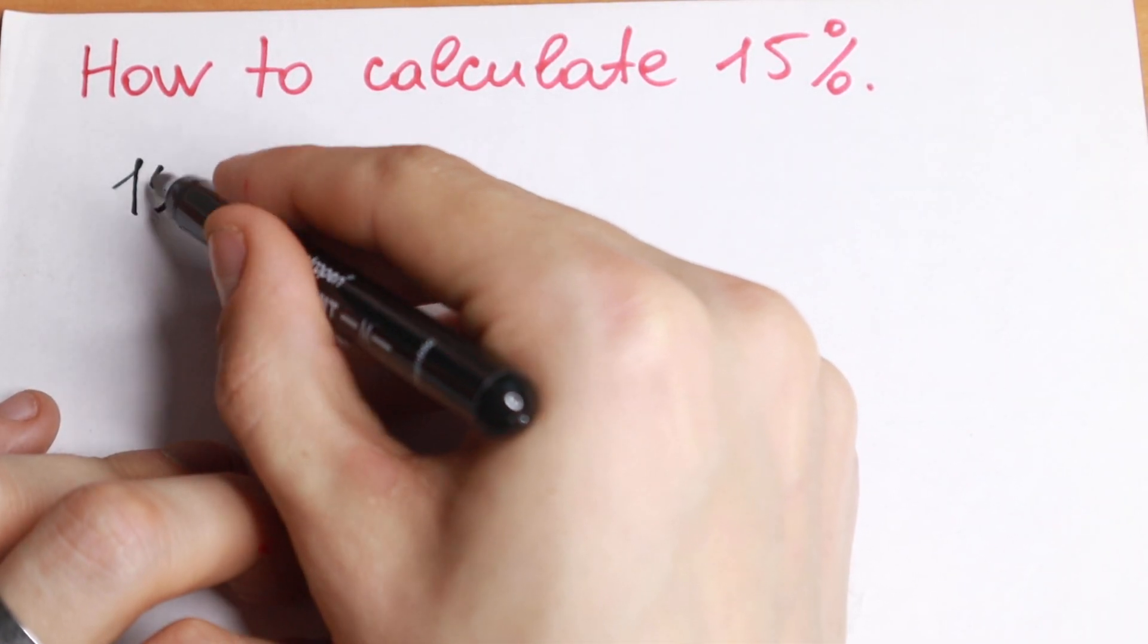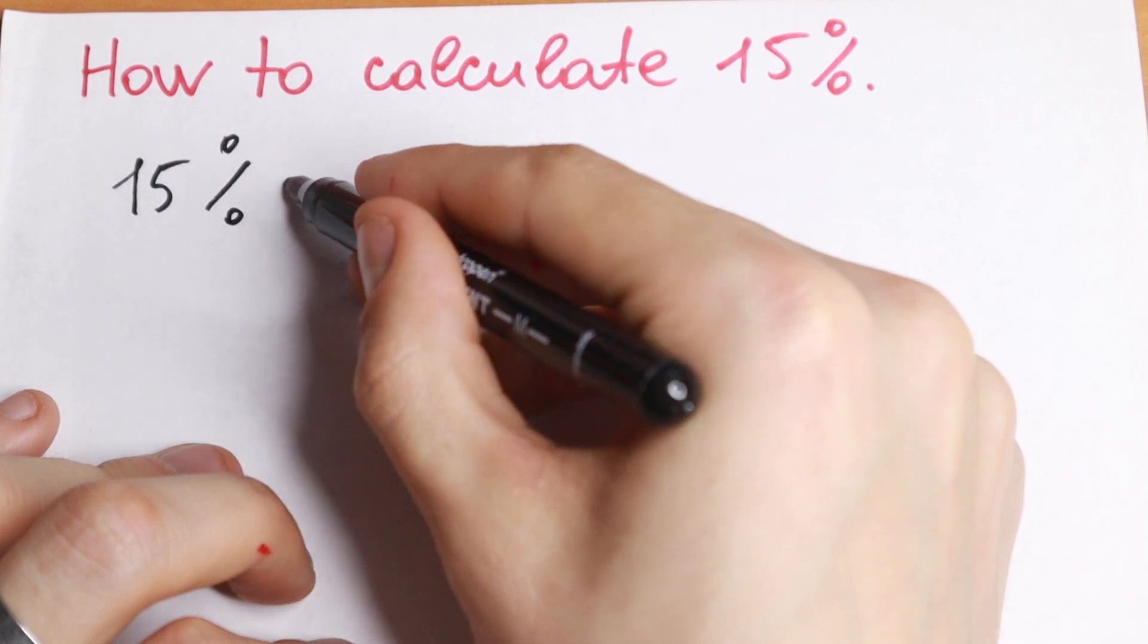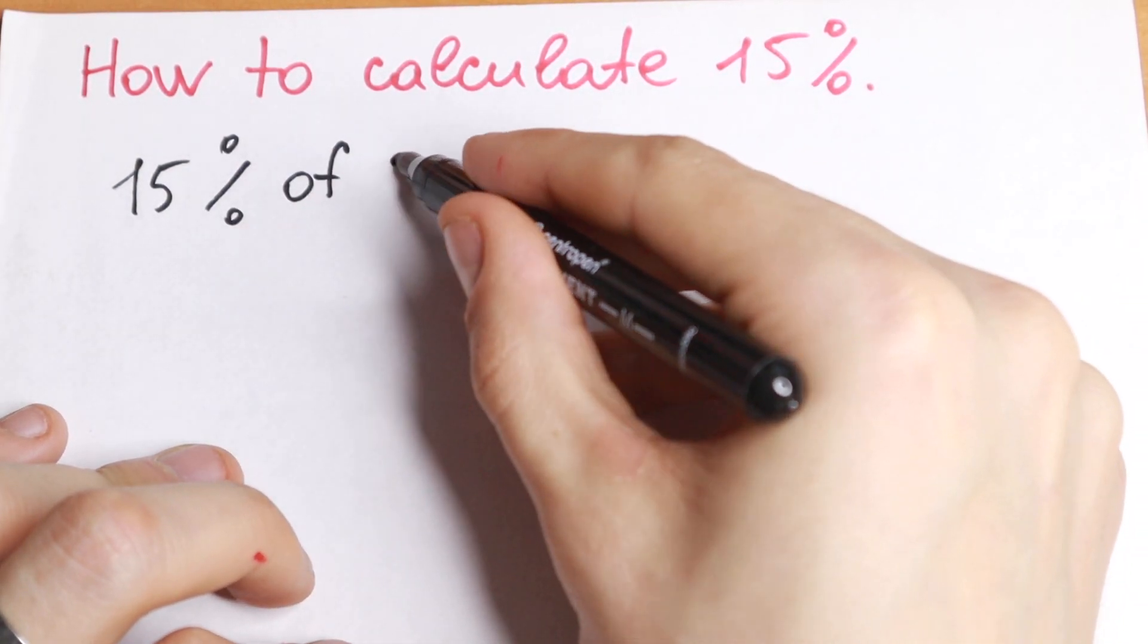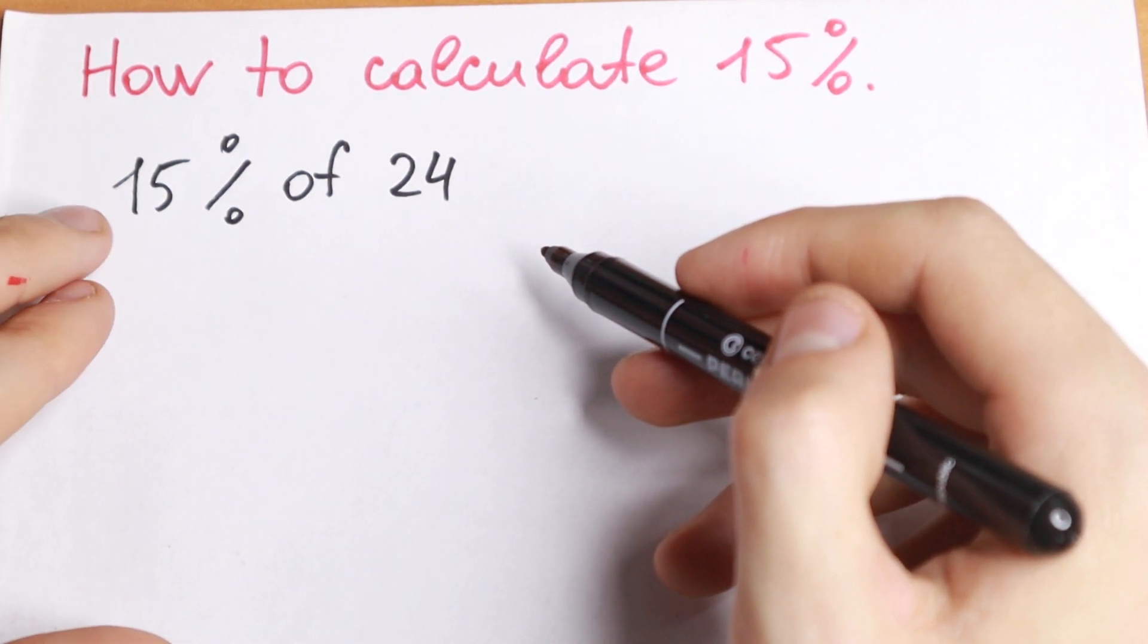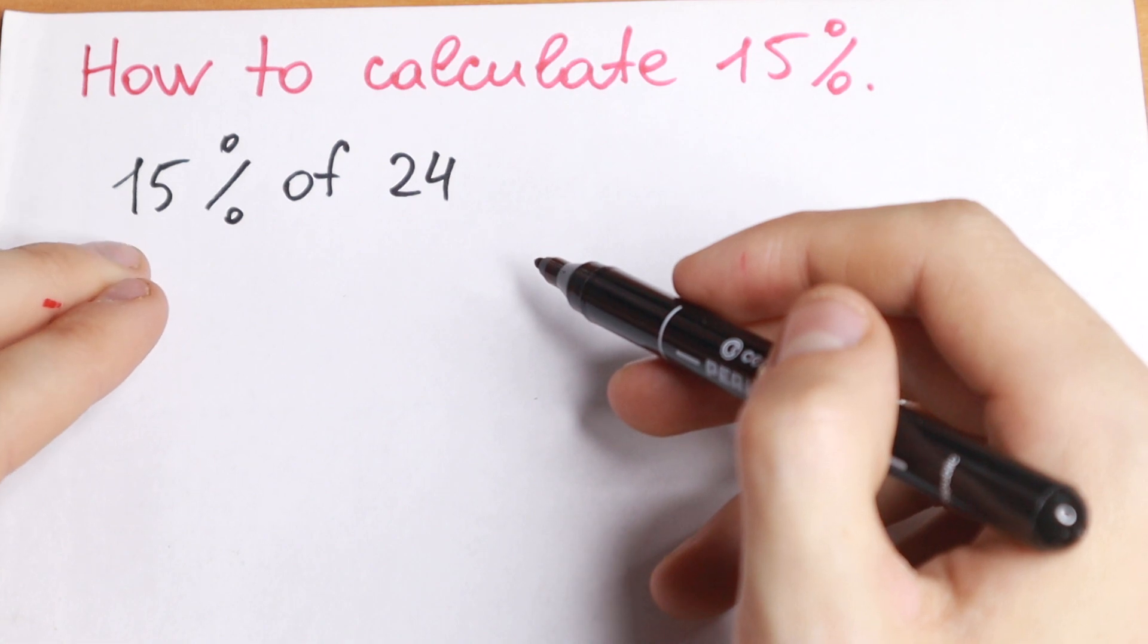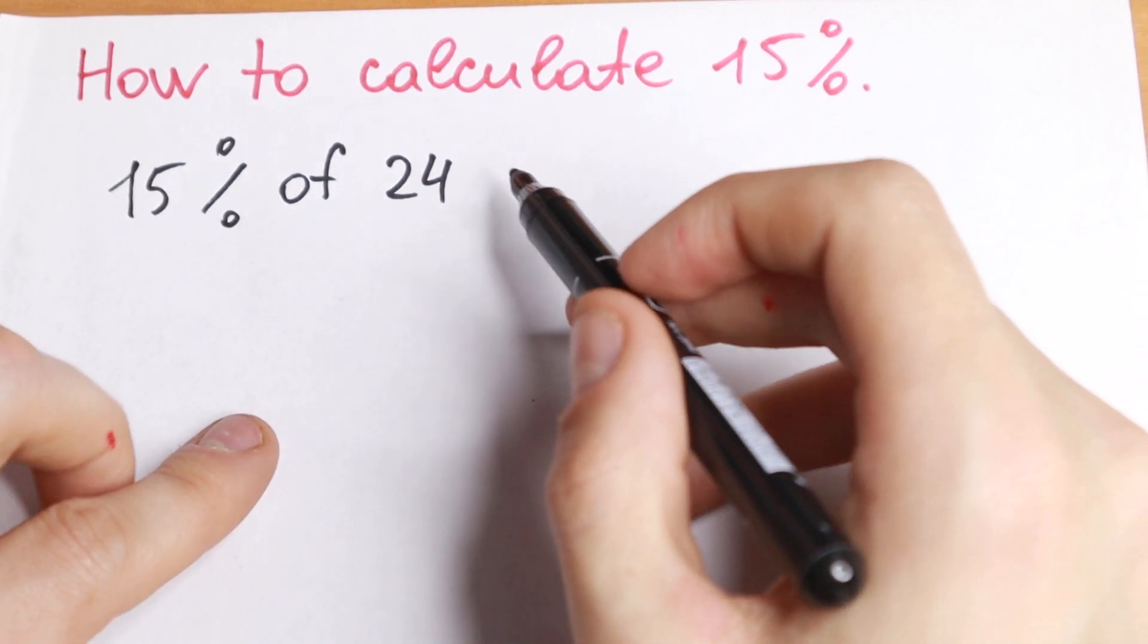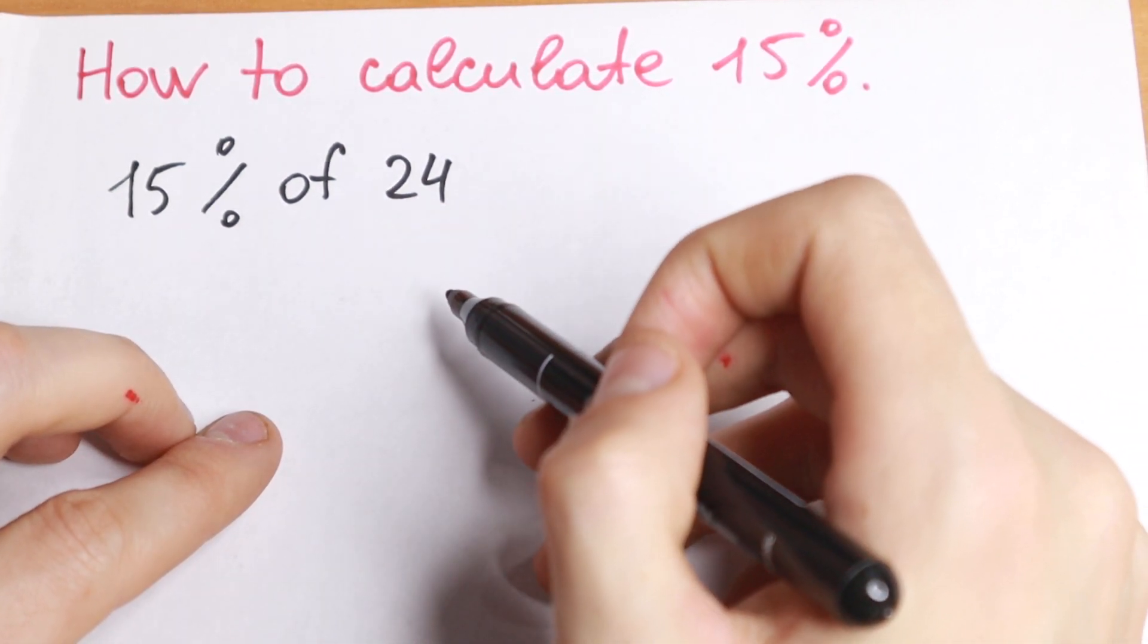So take a look, for example, we need to find 15% of, for example, 24. So take a look, this is not a good percent, this is not our table case, like 50% or 75% or 25%. We have 15%, but we need to find it of this 24.